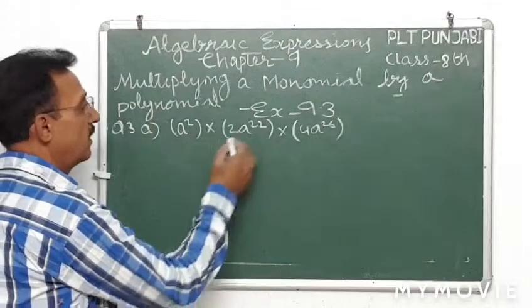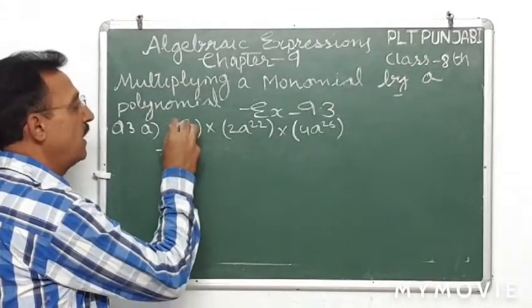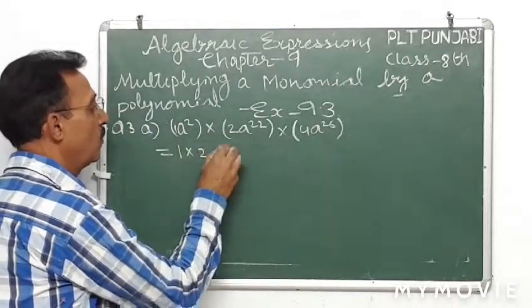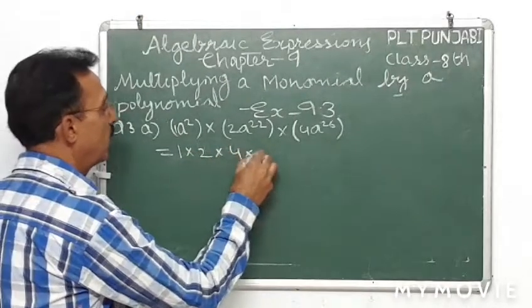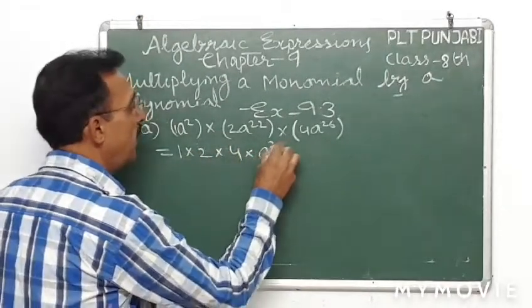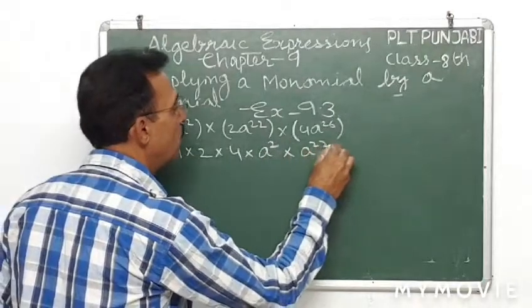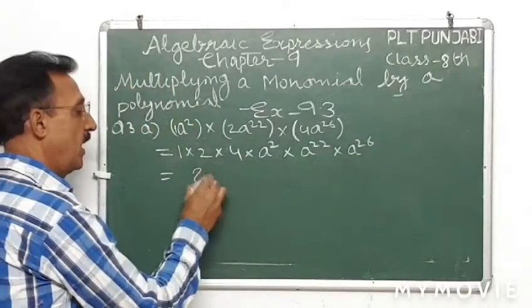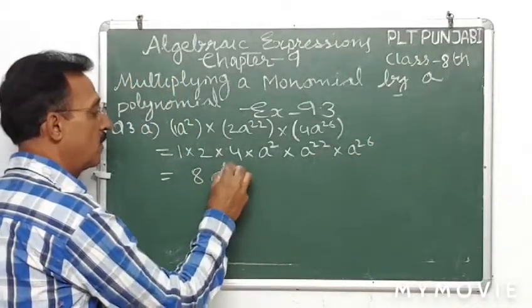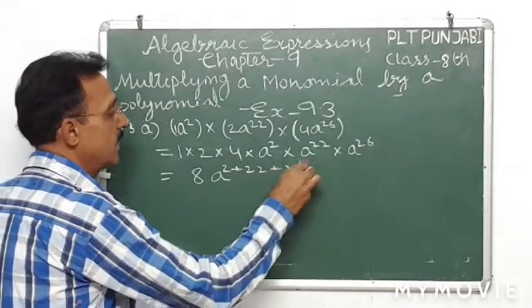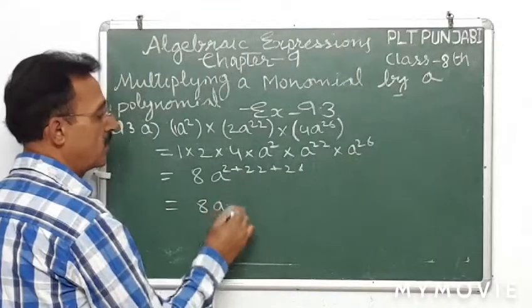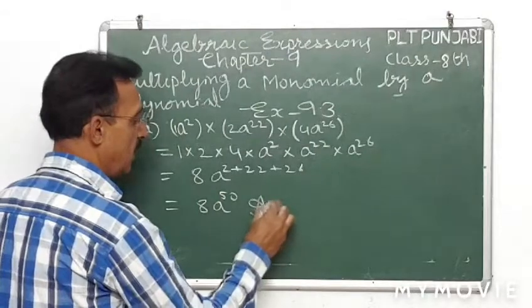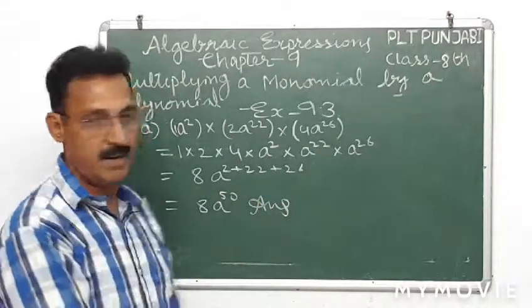So a squared, the coefficient here is one. So one into two into four, then into a raised to power 22, into a raised to power 26. Two into four is eight, and eight is 2 raised to power, 2 plus 22 plus 26. Eight a raised to power 24 and 26 is 50, so this is the answer: 8a raised to power 50.